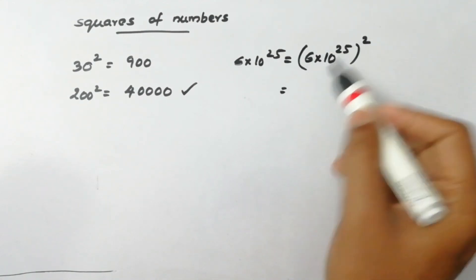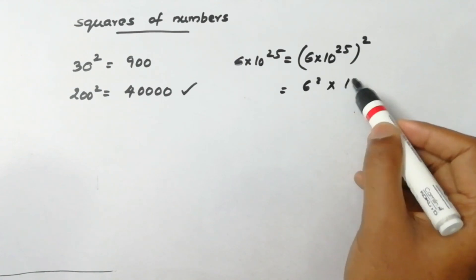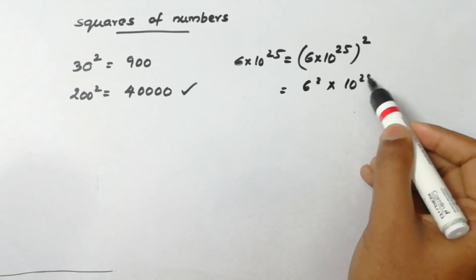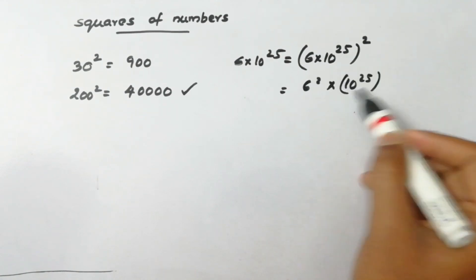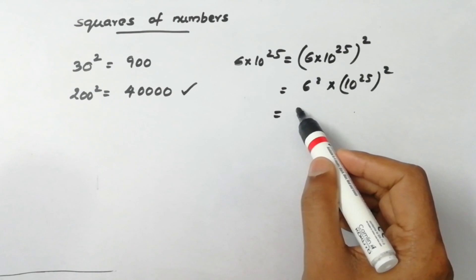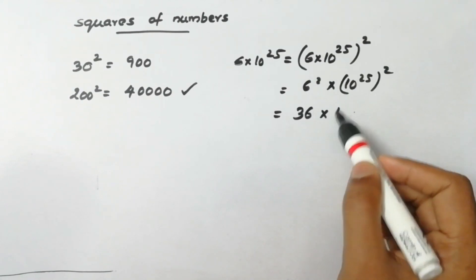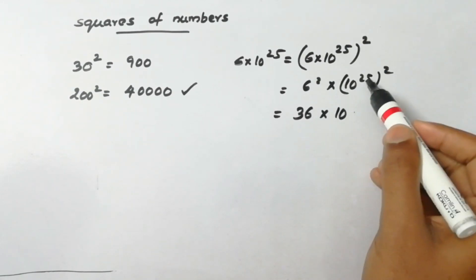That is 1 — 10 raised to 25 square. That's one square of 3. 6 — 10 raised to 25.